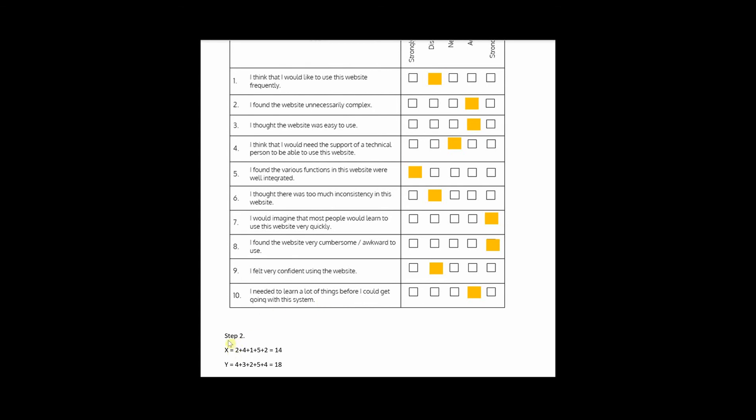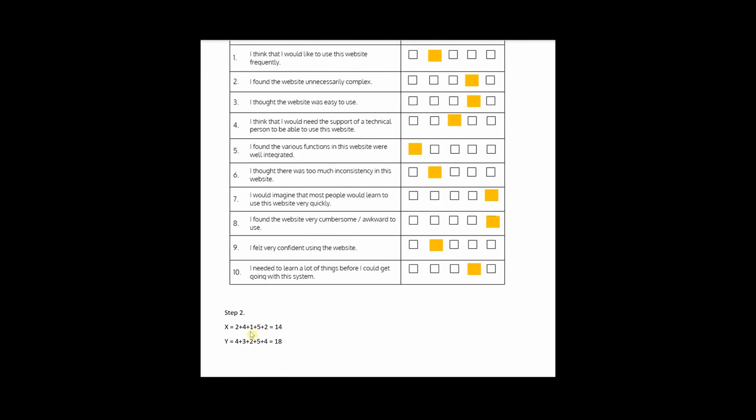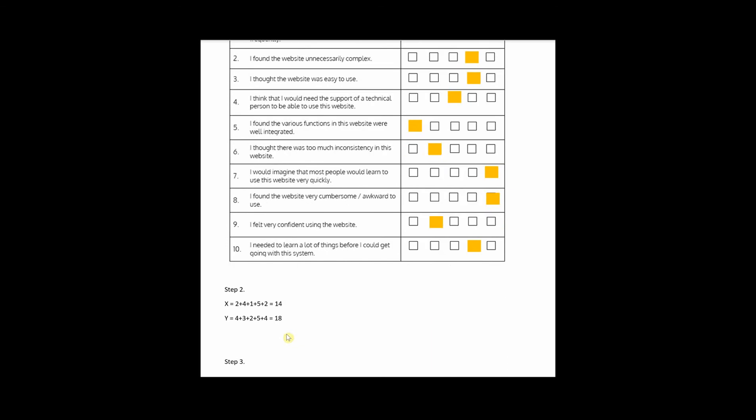Then I'm going to do step 2 of the calculation where I'm going to sum up all the points for odd numbered questions and even numbered questions separately. So I get 14 - this is the sum of all the odd number questions, and 18 is the sum of all the even number questions.